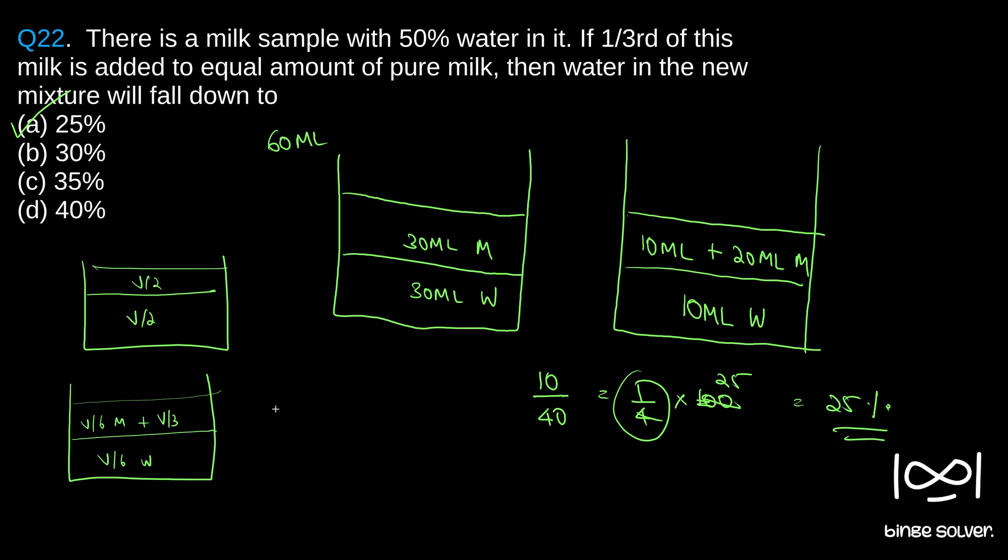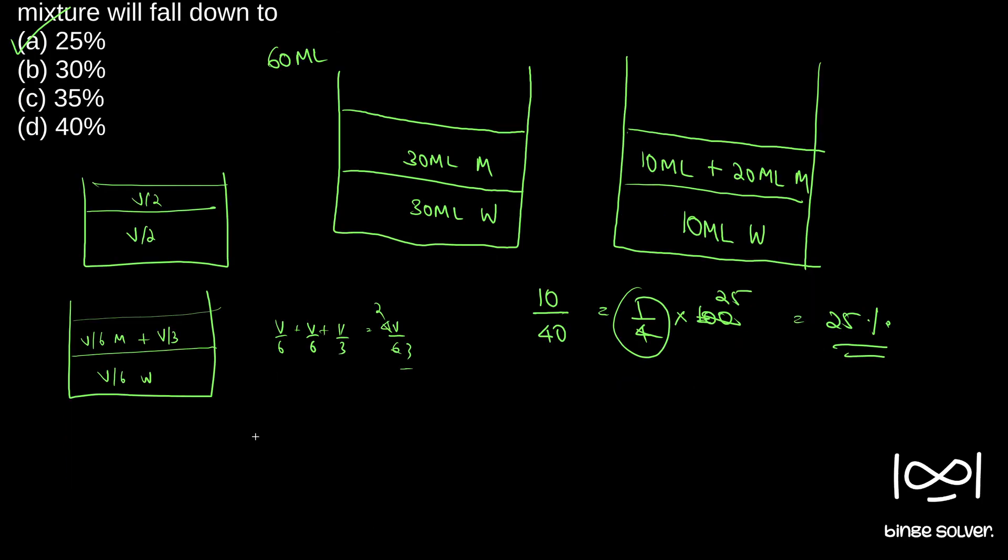So total will become V by 6 plus V by 6 plus V by 3. This becomes 2V by 3, 3V, 4V by 6 or 2V by 3. We get 2V by 3 as the total volume and V by 6 is the water content. And so V by 6 by 2V by 3 becomes V by 4. And percentage becomes V by 4.